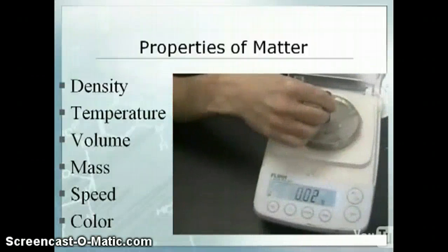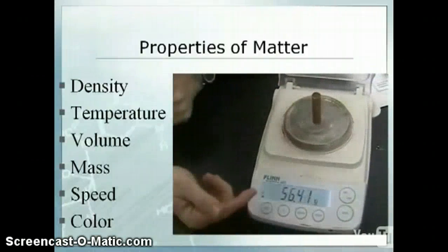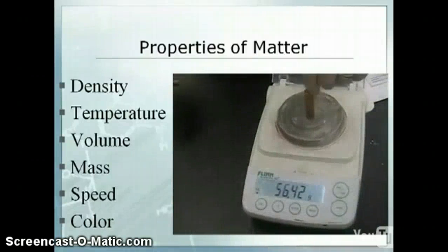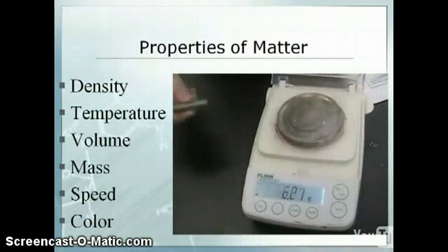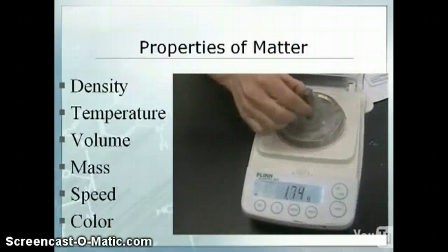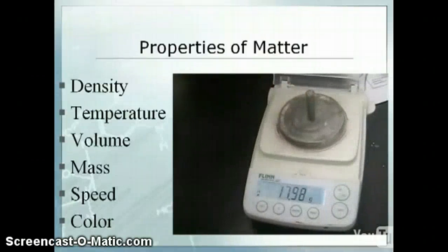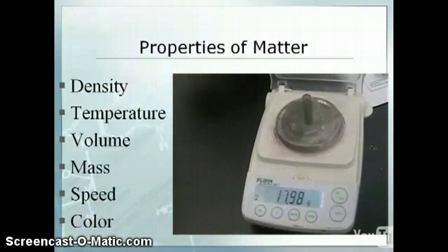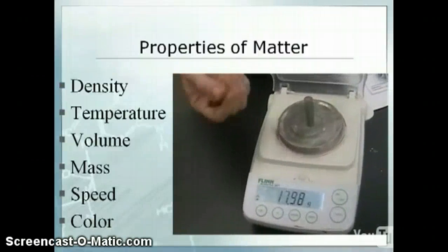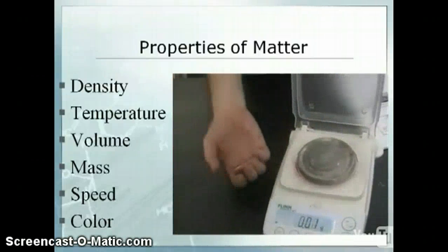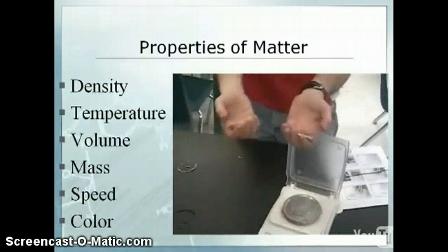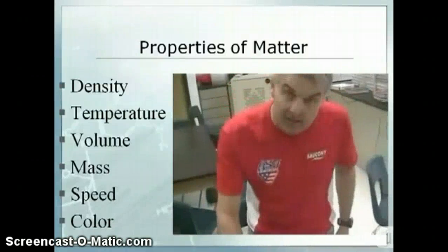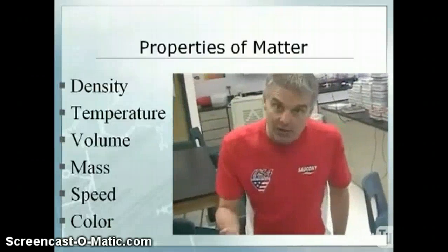If I put the copper one on the scale, you can see it has a mass of 56 and some change grams. And if I take the aluminum and put it on the scale, it only weighs like 17, almost 18 grams — a lot less mass for the same volume. So the same volume: you would say, whoa, this one is really heavy — the copper one is heavy, the aluminum one is light. That's a good illustration of density. It's really the mass divided by the volume.